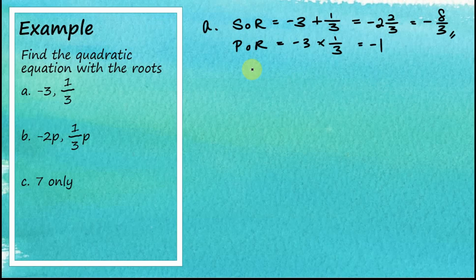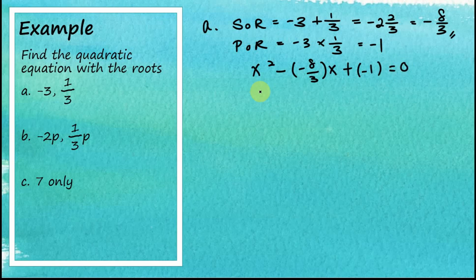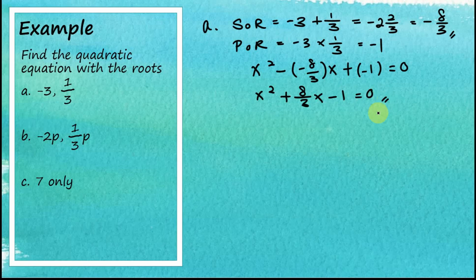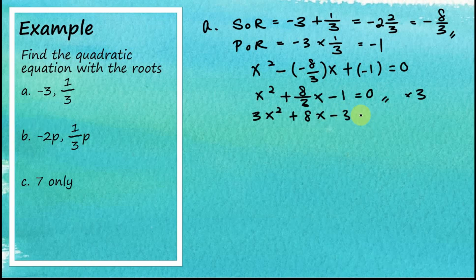For part (a), the quadratic equation is x² - (-8/3)x + (-1) = 0, which simplifies to x² + (8/3)x - 1 = 0. If you don't like fractions as coefficients, multiply the whole equation by 3 to get 3x² + 8x - 3 = 0.